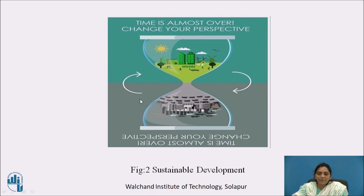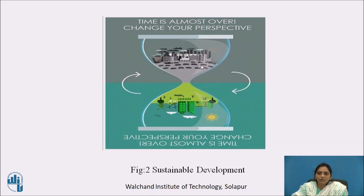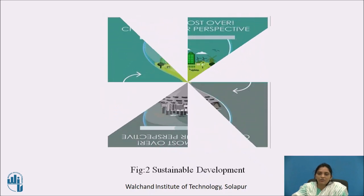Look at this image. The first half shows development that is environment-friendly. But overuse of energy, over-industrialization, and population growth change that image — there is industrialization everywhere, and the number of vehicles exceeds the number of humans. If this continues, there will be no energy available for the next generation. So we must minimize or preserve energy use. If we adopt the concept of sustainable development, that image can be restored and older, better days can return.